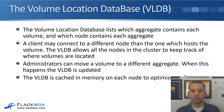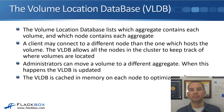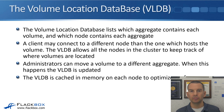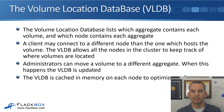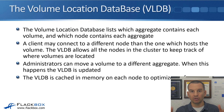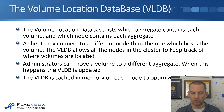As an administrator, you can also move a volume to a different aggregate — for example, if the aggregate is running out of disk space, or if you want to move the volume to lower performance disks because it's older data. You can do that with a volume move. When that happens, the VLDB is updated to reflect the change of which aggregate the volume is now in. The VLDB is cached in memory on each node to optimize performance, so it's stored on vol 0 on the hard disks and also cached in memory.